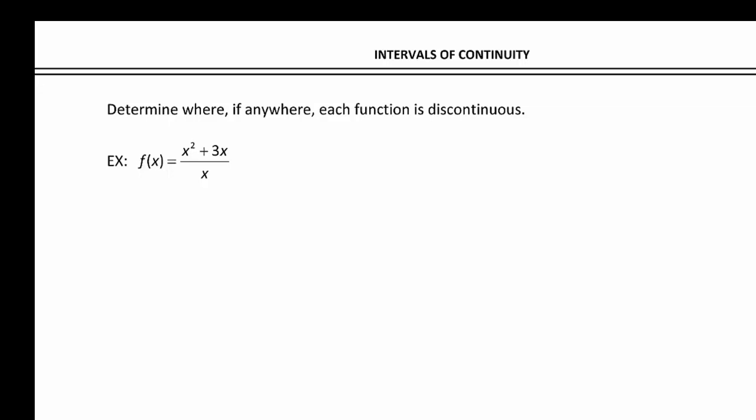Remember that the first step in our continuity test is: is the function defined? So we know right away if a function is undefined at a certain x value, then it's not going to be continuous there. We're looking for asymptotes, holes, anything that makes it undefined, and we know with rationals both those things come from the denominator.